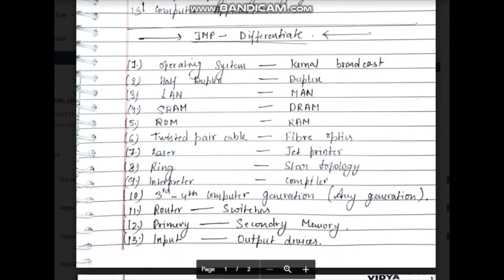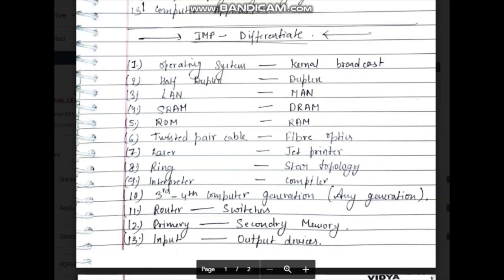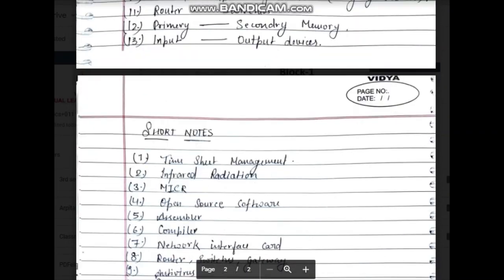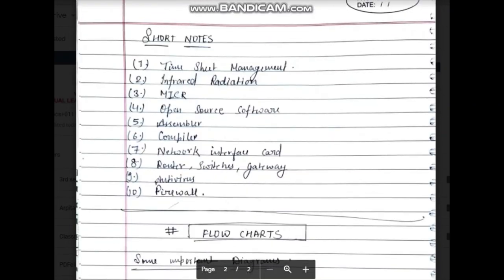What is an interpreter? What is a compiler? Generations-related questions — third or fourth generation questions can come; this is the likely target for this exam sitting. Router and switch, primary and secondary memory are also important. Memory hierarchy is very important and you will find notes on that too.